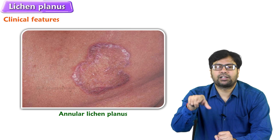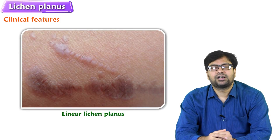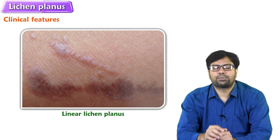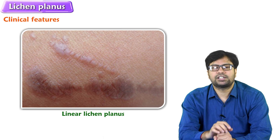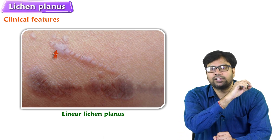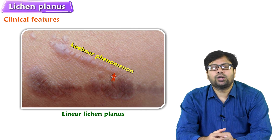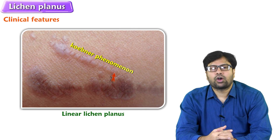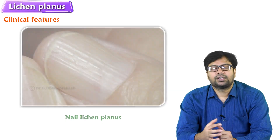Annular lichen planus — this type will have ring-shaped lesions. Then linear lichen planus — if you prick the skin with a nail, lichen planus will grow in the line of the scratch when itching, which is called Kobner phenomenon. Kobner phenomenon is seen in the acute stage of lichen planus.